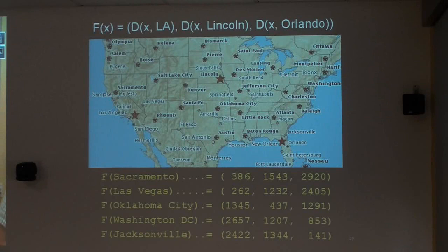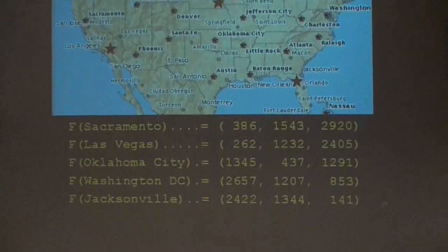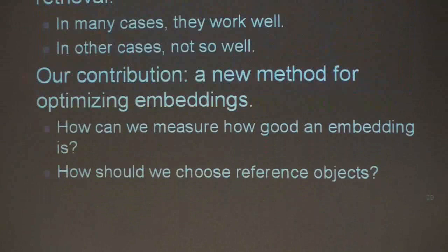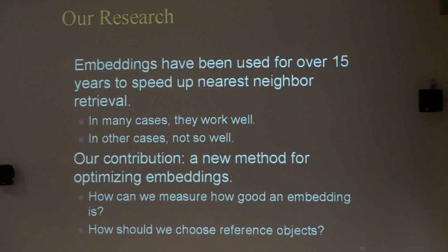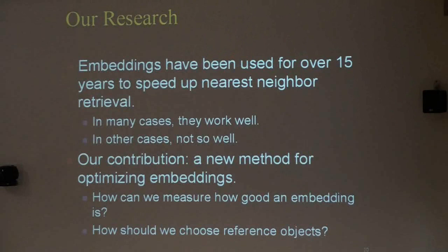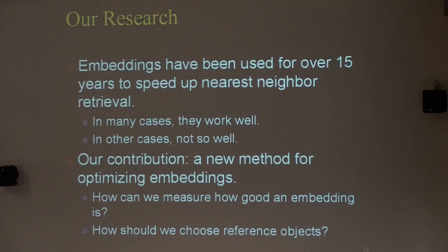The idea is that in most spaces, similar objects that are close to each other tend to have similar distances to other objects — that is the information reference object embeddings capture. This trick has been used for at least 15 years to speed up nearest neighbor retrieval. Our contribution is a new method for optimizing such embeddings based on machine learning. The key questions we tried to answer were: first, what makes an embedding good or bad — what is a good measure of embedding quality? And second, given such a measure, how can we actually optimize an embedding according to it?